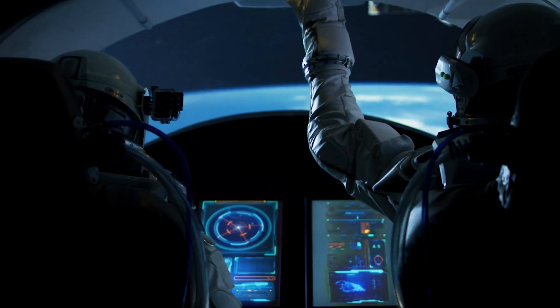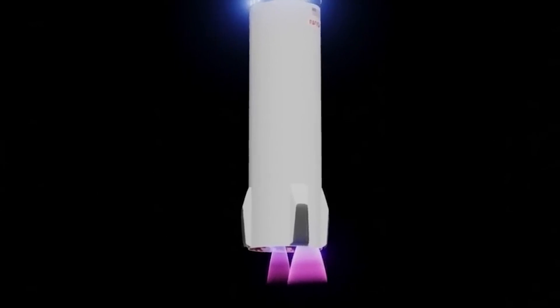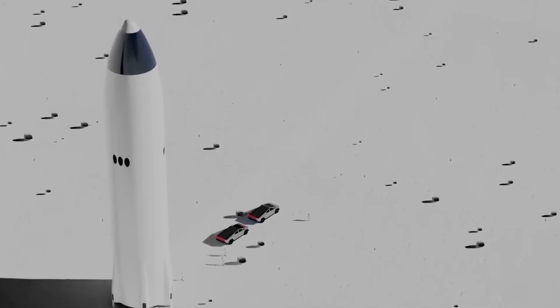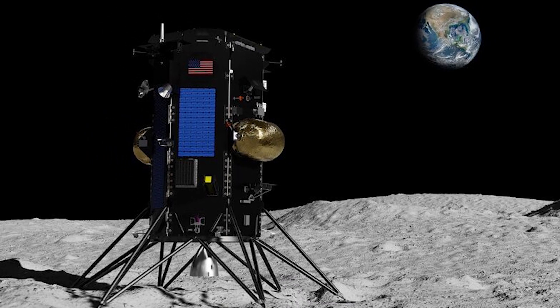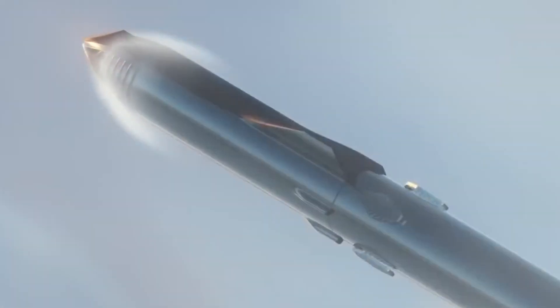NASA selected commercial partner Intuitive Machines to send a lander to Schroeder's Valley, a region on the near side of the moon. During the IM-1 mission, the lander, called NOVA-C, will study how rocket exhaust and space weather affect the lunar surface. The mission is slated to launch on a SpaceX Falcon 9 rocket from Cape Canaveral.